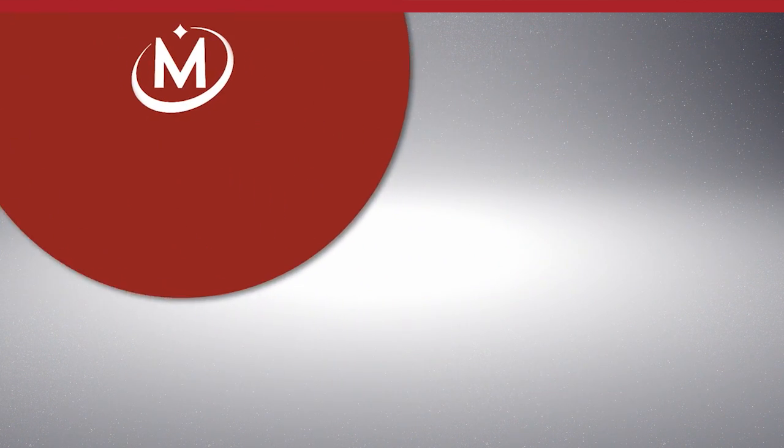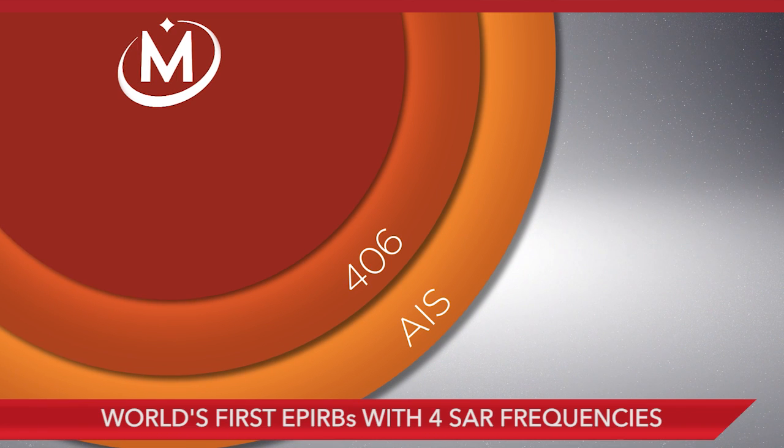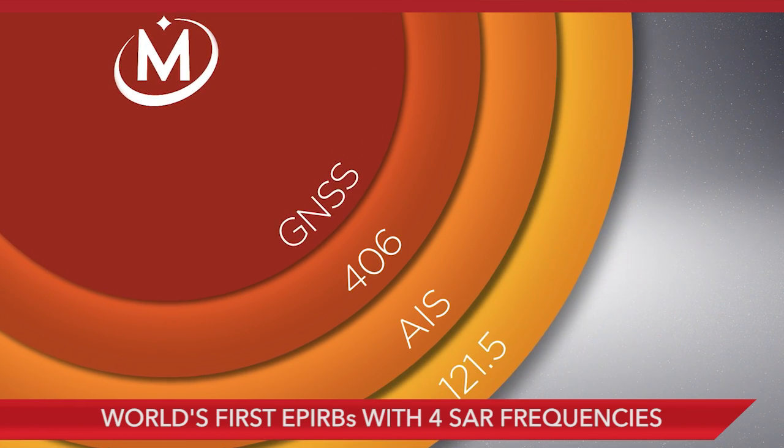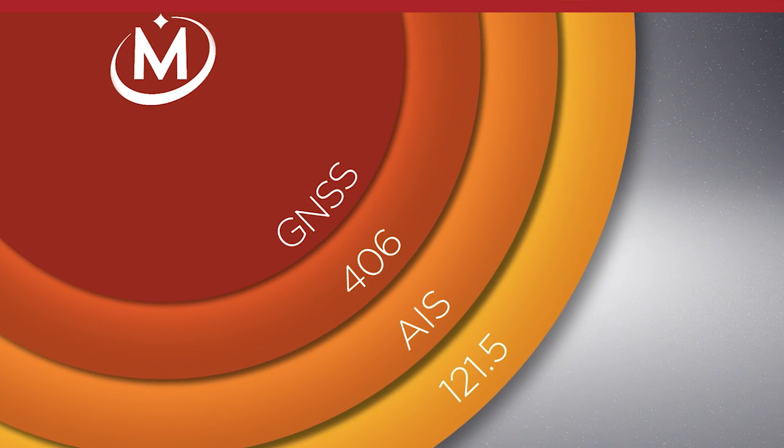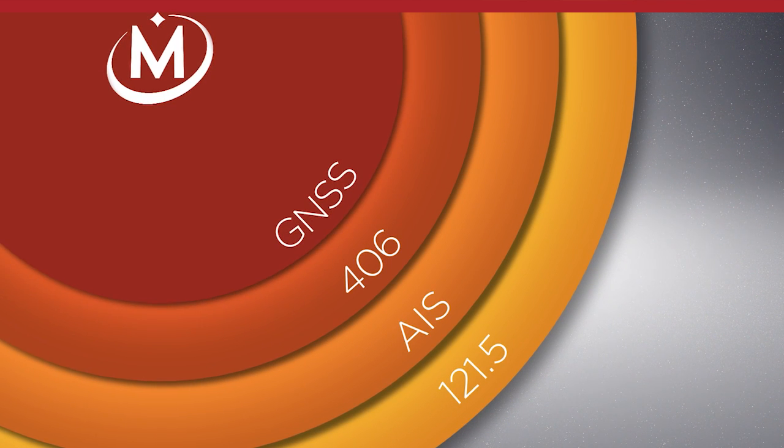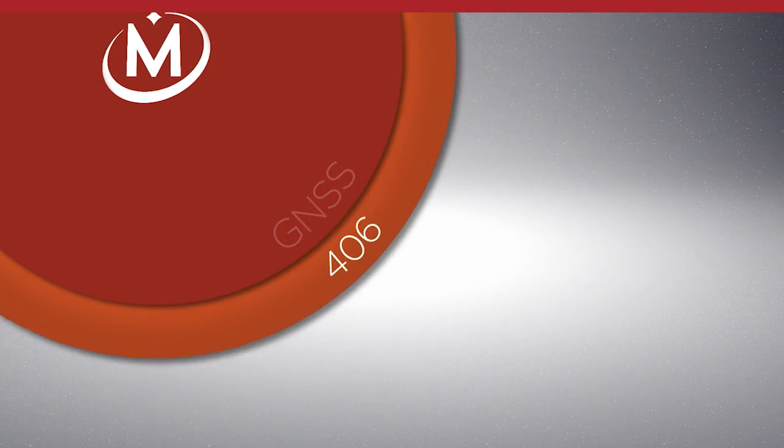Not only do these new EPIRBs combine AIS and 406, in fact, they're the world's first EPIRBs to incorporate four search and rescue frequencies, including 406 MHz and 121.5 MHz for beacon transmission, GNSS, better known as GPS, for enhanced position detection, and AIS for localized connectivity.